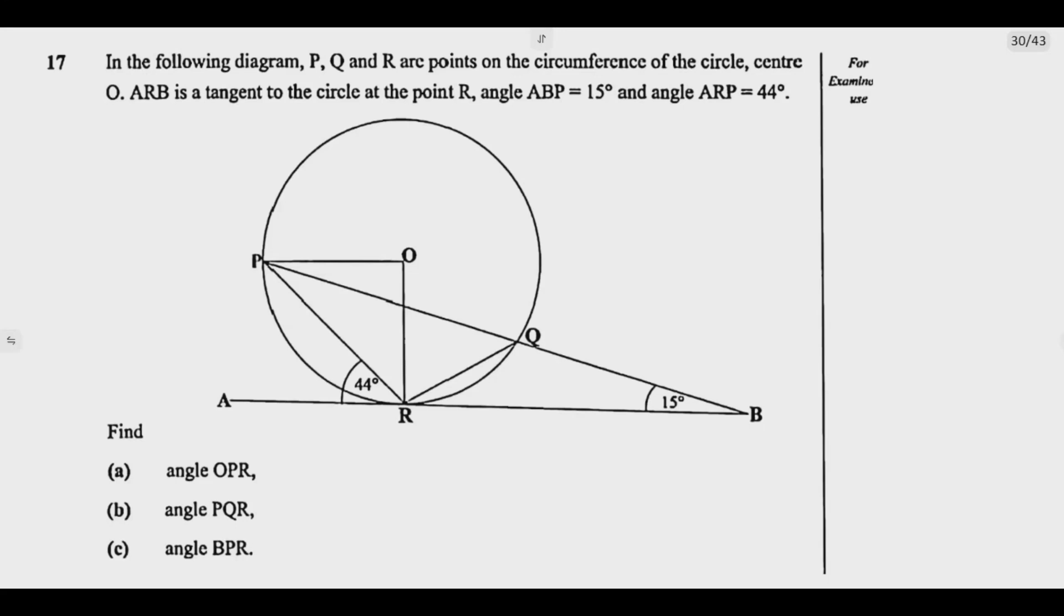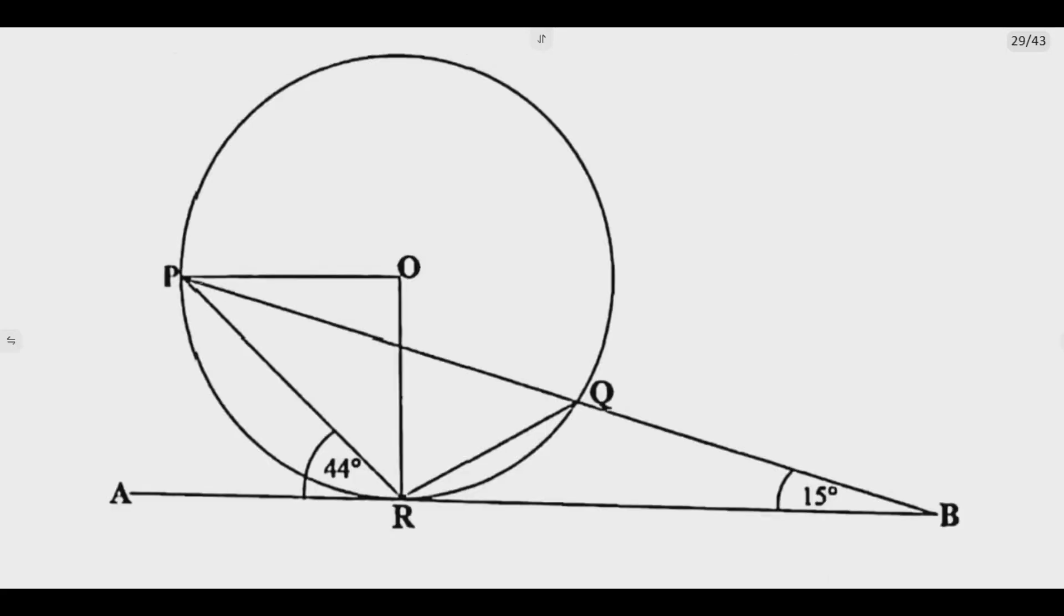So the key is understanding what you are required to find. As we look at this question, we need to understand the key circle theorems. Number one is the radius is perpendicular to tangent. Number two, angles in isosceles triangle. Then alternative segment theorem. Those are the key theorems that we need to use.